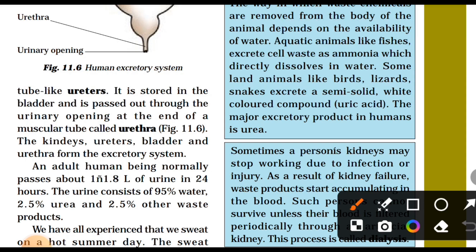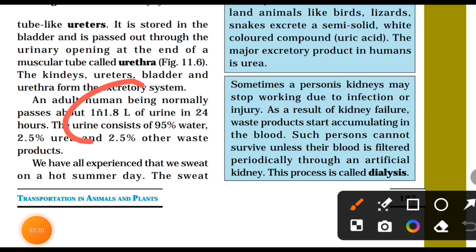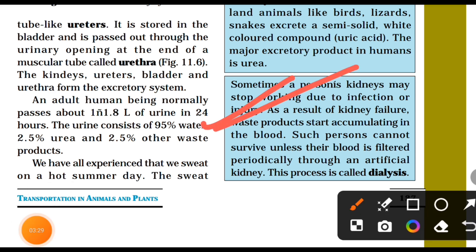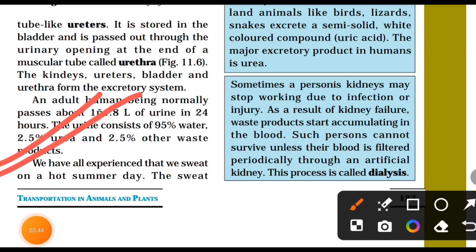Urine is approximately 95% water, 2.5% urea, and 2.5% other waste products. We have all experienced sweating on a hot summer day.